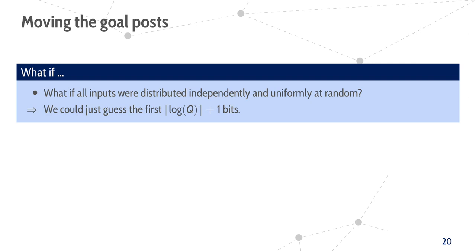For the intuition behind our technique, let us slightly move the goalposts and assume that the adversary were so nice to choose all its queries and its challenge uniformly at random from the domain of the VRF. If this were the case, we could just guess the first log q plus 1 bits of the challenge input, meaning the reduction would abort if the first log q plus 1 bits of the challenge do not match the guess, or if the log q plus 1 bits of any evaluation query do match the guess. Then proving that this strategy yields a loss of only 8q is rather straightforward, and we refer to the paper for the formal proof.